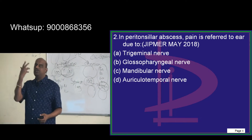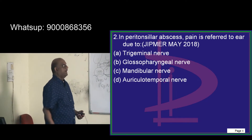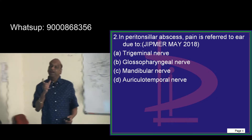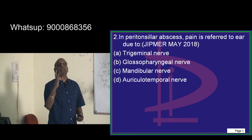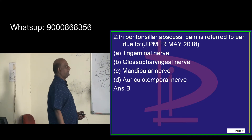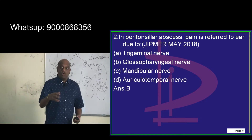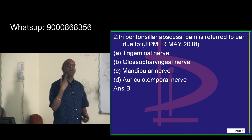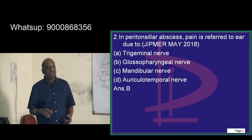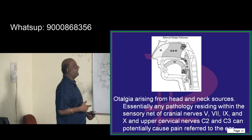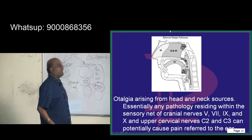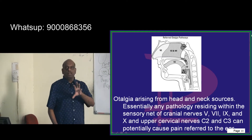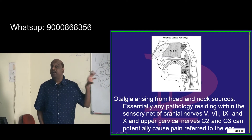Whenever there is a peritonsillar pain, why does the pain refer to the ear? What is the nerve mediating that referral pain — it is a very, very important question. It is the glossopharyngeal nerve which leads to referred pain whenever there is a peritonsillar abscess. In this context, let me tell you what are all the cranial nerves that lead to referred otalgia.